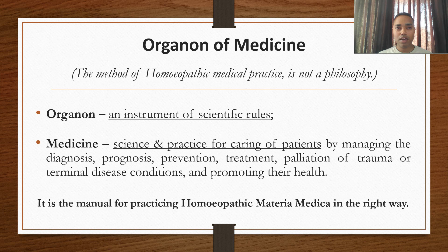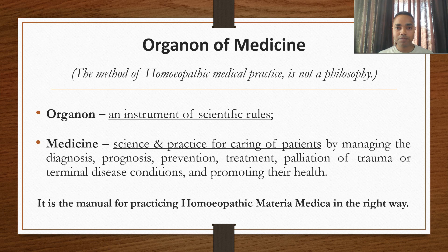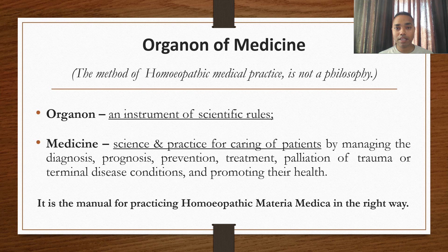Just like when you buy a gadget — a laptop, mobile, vehicle, or weapon — you will have a manual. The Organon of Medicine is also a manual for our Materia Medica, such as the weapon — medicines for use. It is a manual in which all the terms and conditions are written regarding how to use and not to use, and the final selection of remedies after repertorization of Materia Medica. This is the manual for practicing homeopathic Materia Medica in the right way.